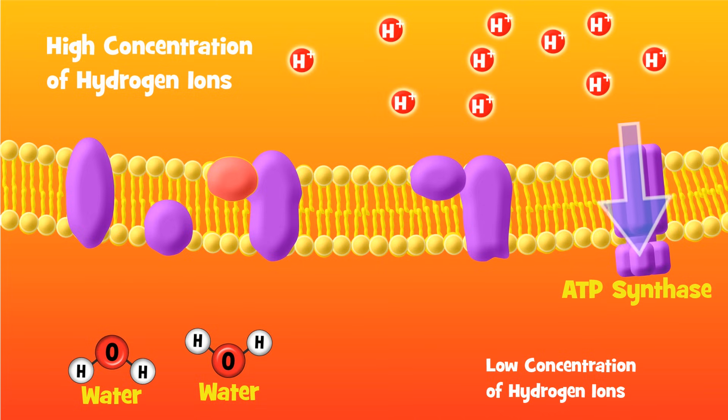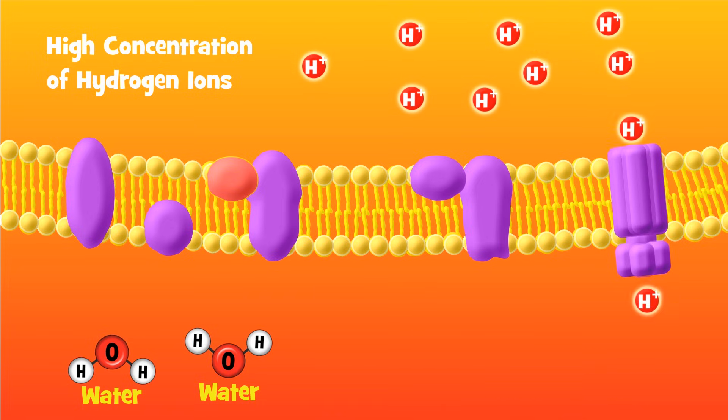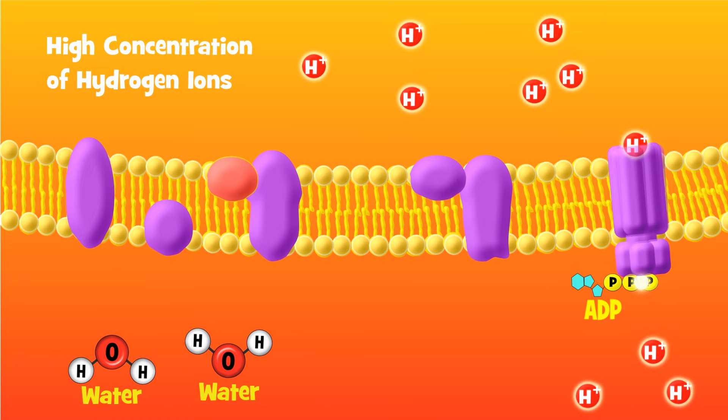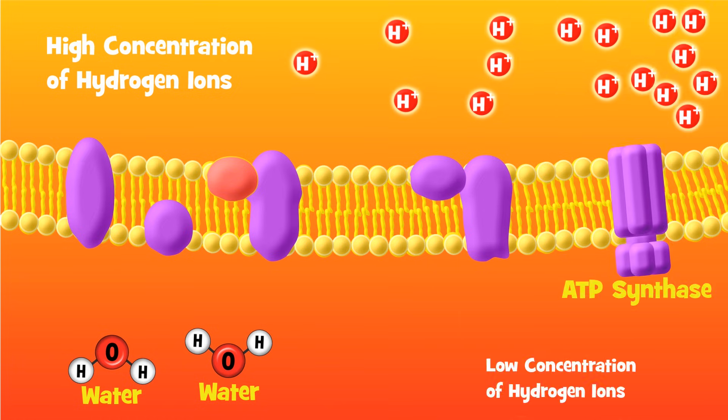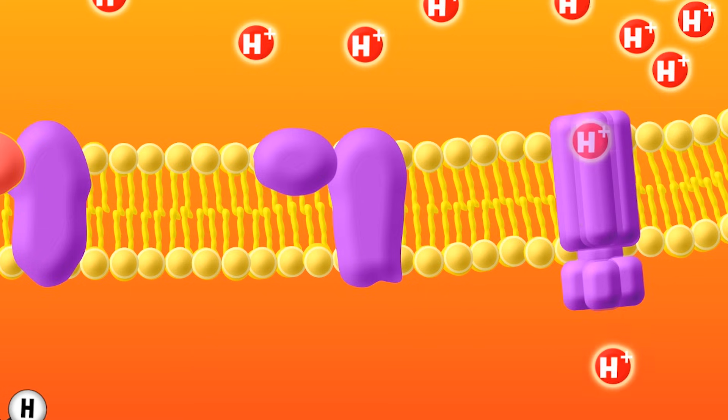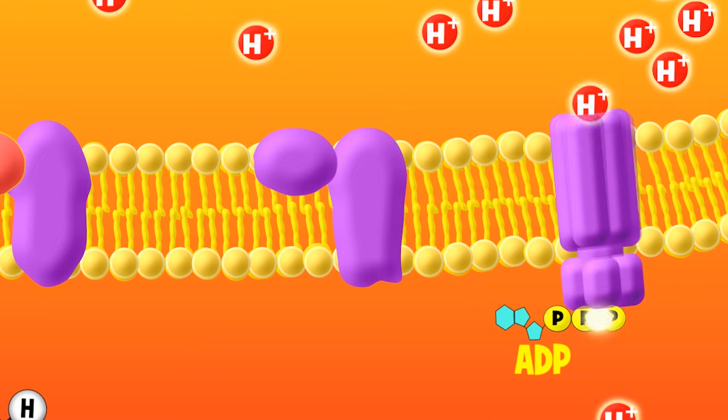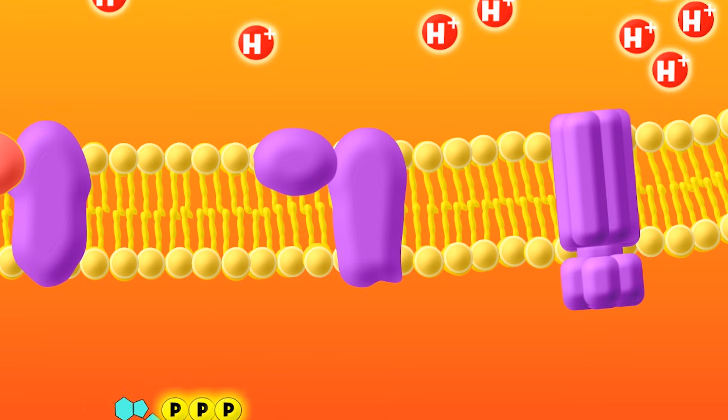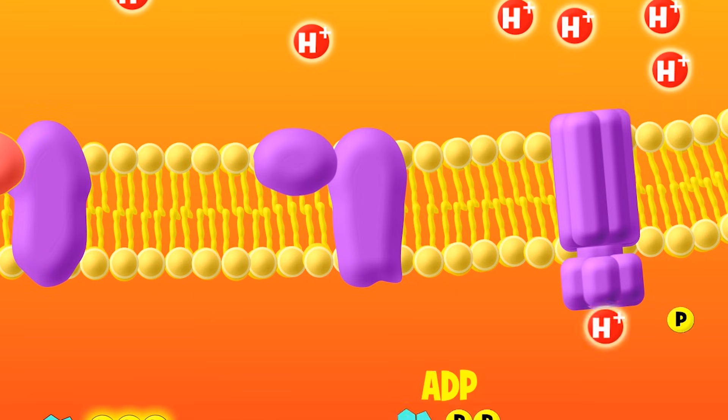This facilitated diffusion of hydrogen ions through ATP synthase causes ATP synthase to spin like a turbine and produce ATP. Such a cool mechanism. It's like a microscopic hydroelectric dam, generating ATP instead of electricity as hydrogen ions passively flow through.